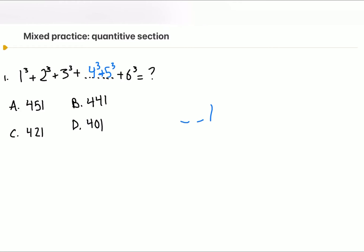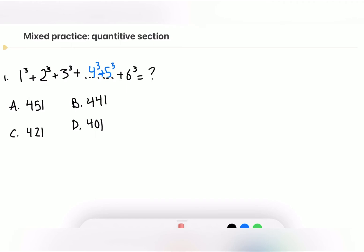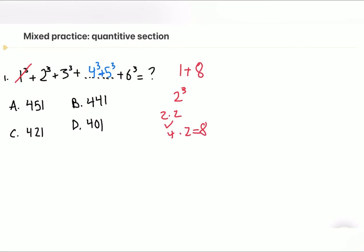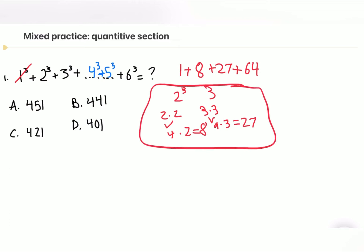Let's set it up. I'll use red for reference. We have one. Two cubed: two times two is four, four times two is eight. Three cubed: three times three is nine, nine times three is 27. If you have these memorized it's easier, but you can work through them this way.